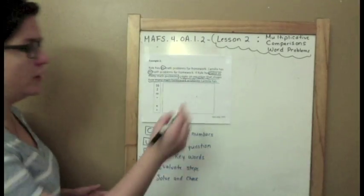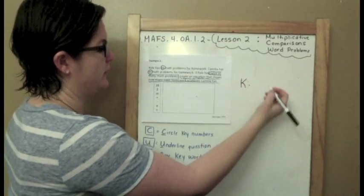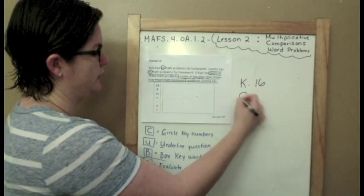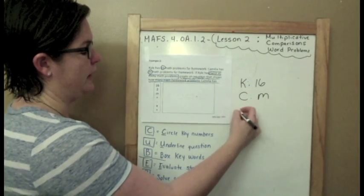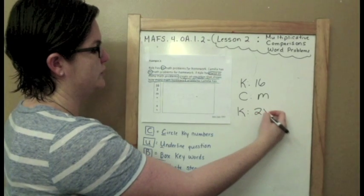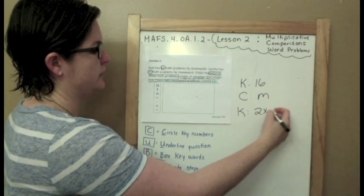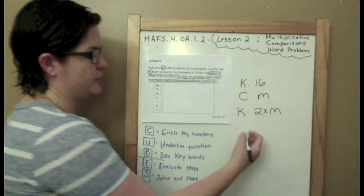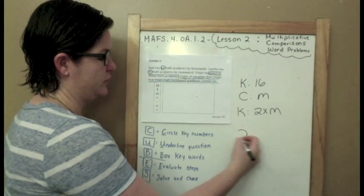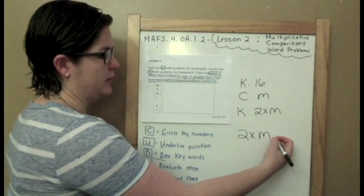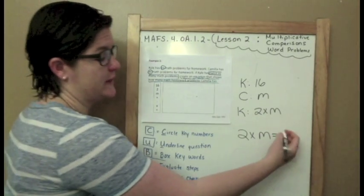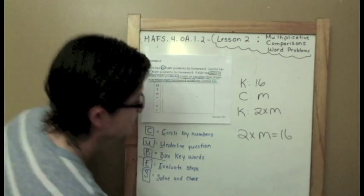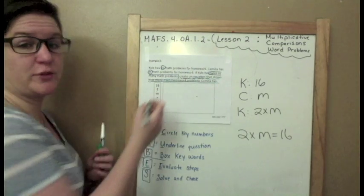Let's break it down and evaluate it. Kyle has to solve 16 math problems for homework. Camille has M, and we know that Kyle has two times what Camille has. So our equation would be two times what Camille has, which is M, two times M equals 16. That's what I'm going to put in my box right here. So if this were the computer, I would drag it.